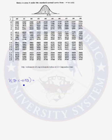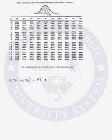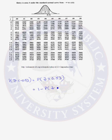Looking for a Z score of negative 0.53 in our table, we see that we do not have any negative Z scores listed. We can use the symmetry property of the normal distribution to find this probability. Because the normal distribution is symmetric, the probability that a random variable is less than negative 0.53 is the same as the probability that the random variable is greater than 0.53. We are once again trying to find the area to the right of a Z score, so we must find 1 minus the probability of the complement: 1 minus the probability that Z is less than or equal to 0.53.